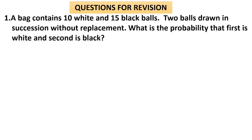Now let us go for some questions making use of this Multiplication Theorem of Probability. A bag contains 10 white and 15 black balls. Two balls are drawn in succession without replacement. What is the probability that the first is white and the second is black? This multiplication idea is applied when there are events following one after the other. Here there is a condition of without replacement, therefore you have to make use of that condition.